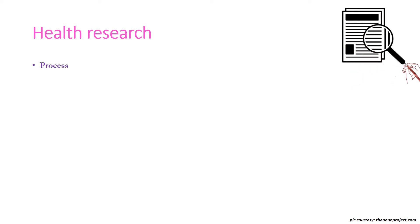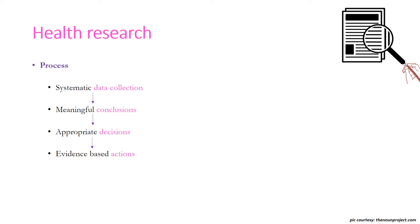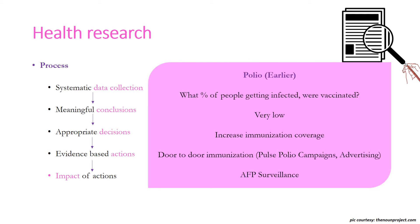The process of health research includes collecting data systematically, drawing meaningful conclusions, taking appropriate decisions, doing evidence-based actions, and evaluating the impact of those actions. For example, with poliomyelitis, we needed data on what percentage of infected people were actually vaccinated. If the conclusion was very low coverage, the appropriate decision was to increase immunization coverage. Actions taken included door-to-door immunization, pulse polio campaigns, and advertising, and the impact was evaluated through AFP surveillance.